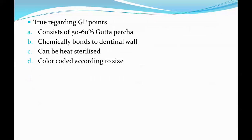Next question: which is true regarding GP (gutta percha) points? Options: A) consists of 50 to 60 percent gutta percha, B) chemically bonds to the dentinal wall, C) can be heat sterilized, D) color coded according to size. Option D is the correct answer, because gutta percha points cannot be heat sterilized, do not chemically bond to the dentinal wall, and consist of 50 to 60 percent zinc oxide — they are color coded according to size.